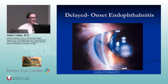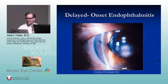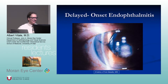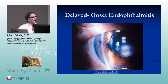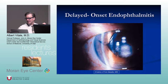In patients with delayed onset endophthalmitis — including not only Propionibacterium acnes, which is a common causative organism, but also fungal organisms — the organisms like to reside in the capsular plaque.